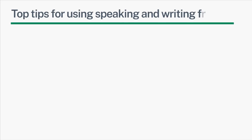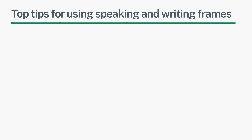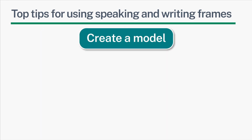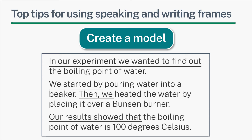Top tips for using speaking and writing frames. To create a speaking or writing frame, think about what your learner will need to say or write in order to do the task. First, start by writing or saying a model answer yourself. If you're creating a speaking frame, you might want to record yourself so you can listen back to the language used to do the task. Then, either listen to the recorded oral model or look at the written model and identify which words and phrases you want your learners to use in their speaking or writing.